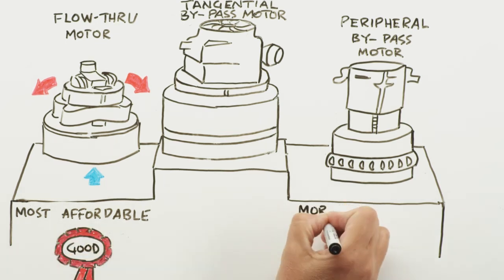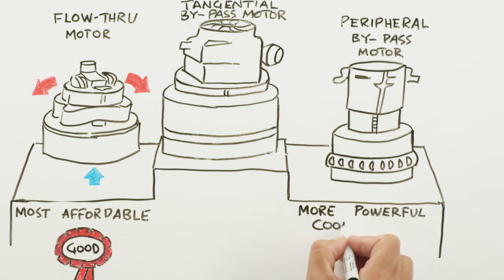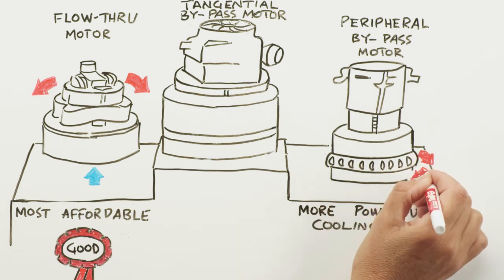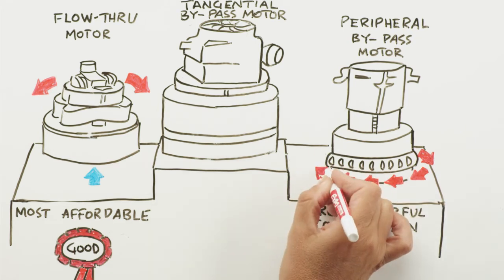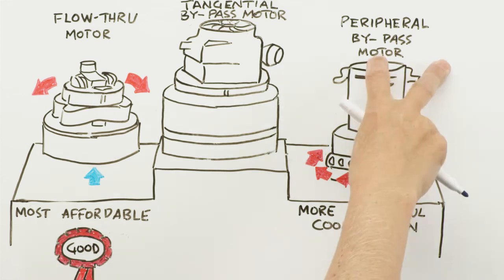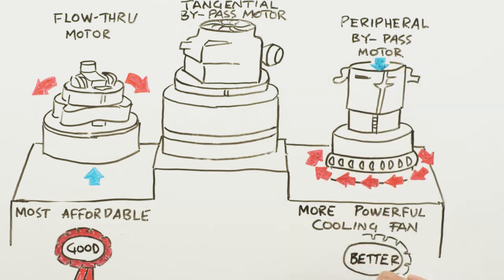A peripheral bypass motor is a motor with a dedicated cooling fan that blows fresh, clean air over the armature and exhausts it through small vents around the side of the motor. This motor is a better option, but it also exhausts heated air around the motor, which can affect motor life.